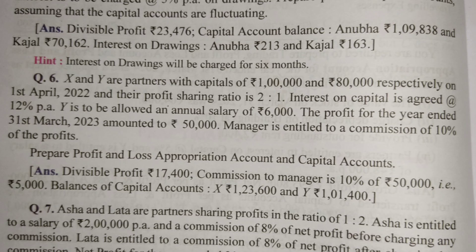Look at the question. X and Y are partners with capitals of 1,80,000 and 80,000 respectively on 1st April 2022. Their profit sharing ratio is 2 to 1. Interest on capital is agreed at the rate of 12% per annum. Y is to be allowed an annual salary of 6,000.